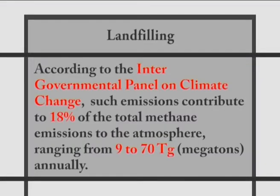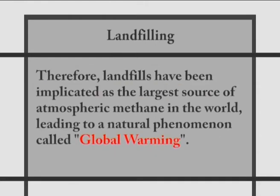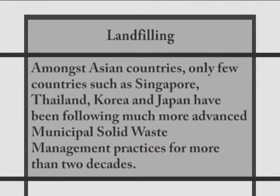Traditional landfills also do not have a top cover or other preventive measures to reduce methane emission into the atmosphere. Methane and carbon dioxide are the principal gases produced from the decomposition of the organic fraction of solid waste in the landfill. Methane gas has a 21-fold global warming potential as compared to carbon dioxide. According to the Intergovernmental Panel on Climate Change, such emissions contribute to 18% of the total methane emissions to the atmosphere, ranging from 9 to 70 megatons annually. Therefore, landfills have been implicated as the largest source of atmospheric methane in the world, leading to global warming. Amongst Asian countries, only a few such as Singapore, Thailand, Korea, and Japan have been following much more advanced municipal solid waste management practices for more than two decades, and all these countries use incineration plants to get rid of municipal solid waste.